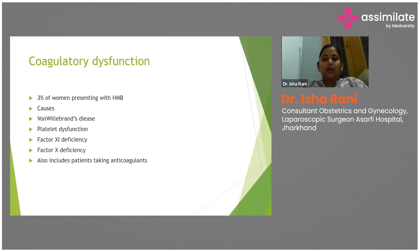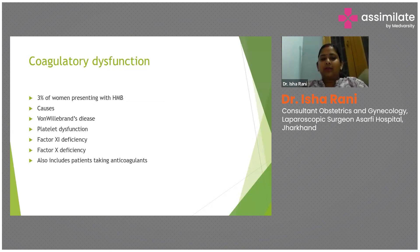Coming to non-structural causes: coagulopathy accounts for around 3% of women presenting with heavy menstrual bleeding. Causes include von Willebrand's disease, platelet dysfunction, factor XI deficiency, and factor X deficiency. Patients on anticoagulants who present with menorrhagia are also included in this category.